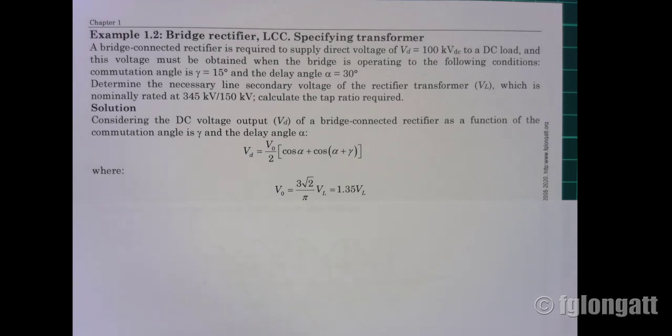A lot of my students don't like 3 times square root 2 divided by pi; they prefer just 1.35. That is a possibility.